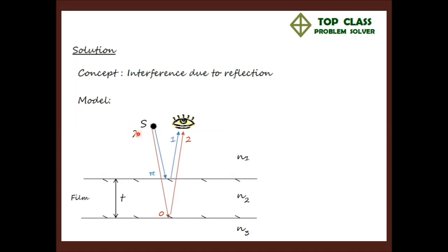The second ray is incident in the medium of higher refractive index and reflects off the medium of lower refractive index. That type of reflection we call a soft reflection. For a soft reflection, the sine wave experiences a phase shift of 0 at reflection.